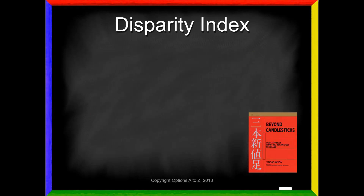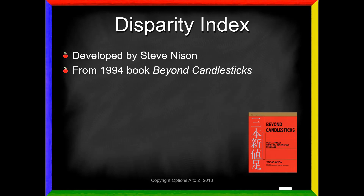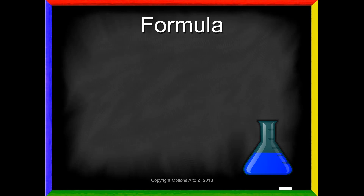The disparity index — not to be confused with the despair index — was created by Steve Nissen. Many of you know that name; he's very famous in the technical world, having written a ton of books on candlesticks and technical trading. This index was first mentioned in his 1994 book called Beyond Candlesticks. The formula is a fairly simple calculation — I don't need to bring up an Excel spreadsheet to show how it's done.